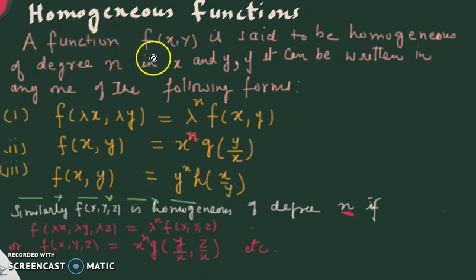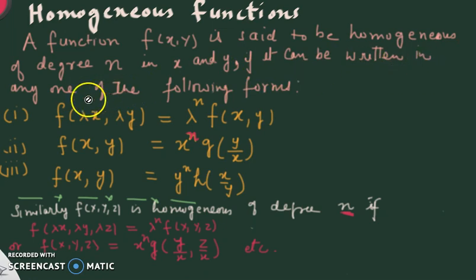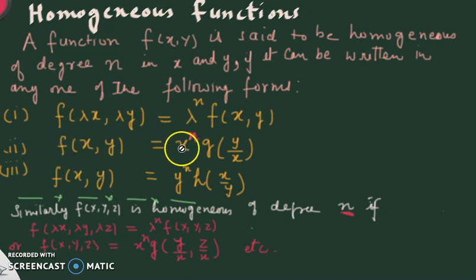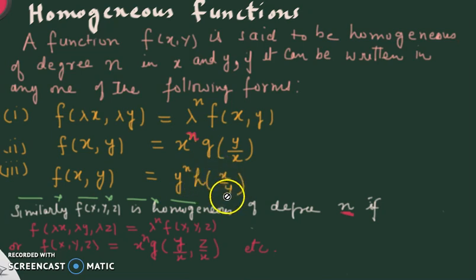Now the definition: a function f(x,y) is said to be homogeneous of degree n in x and y if it can be written in any one of the following forms. First form: replace x by λx and y by λy — if you get λⁿ·f(x,y), it is homogeneous of degree n. Second form: factor out xⁿ and get a function of y/x. Third form: factor out yⁿ and get a function of x/y. This extends to any number of variables.